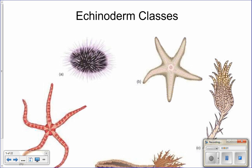Last time we talked about echinoderms — the phylum characteristics. Those are: pentamerous symmetry, tough skin with spines, madreporite, water vascular system, and regenerative abilities. This time we're going to go over the different echinoderm classes and then talk about form and function — how they carry out the seven essential functions.